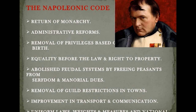The Napoleonic Code included: the return of monarchy being abolished, administrative reforms — he wanted to change the entire system of king and queen rule. He wanted the removal of privileges based on birth, so not only the privileged upper-class people would get everything but each and every one should get equal rights. Then equality before law and the right to property — all people should have rights to property, education, and everything. He also wanted to abolish the feudal system by freeing the peasants from manorial dues, since lower-class people took loans from upper-class people just to build their homes or eat.